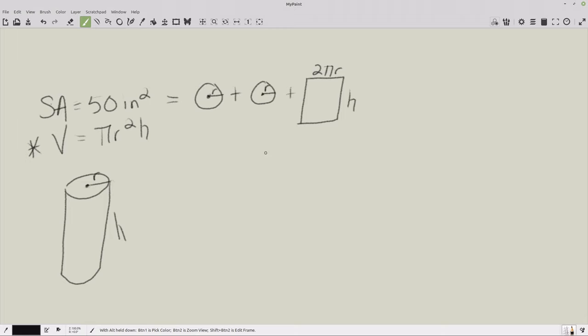So, again, we're trying to figure out... This is pi r squared, and this is pi r squared. That's going to be the areas of both those circles.